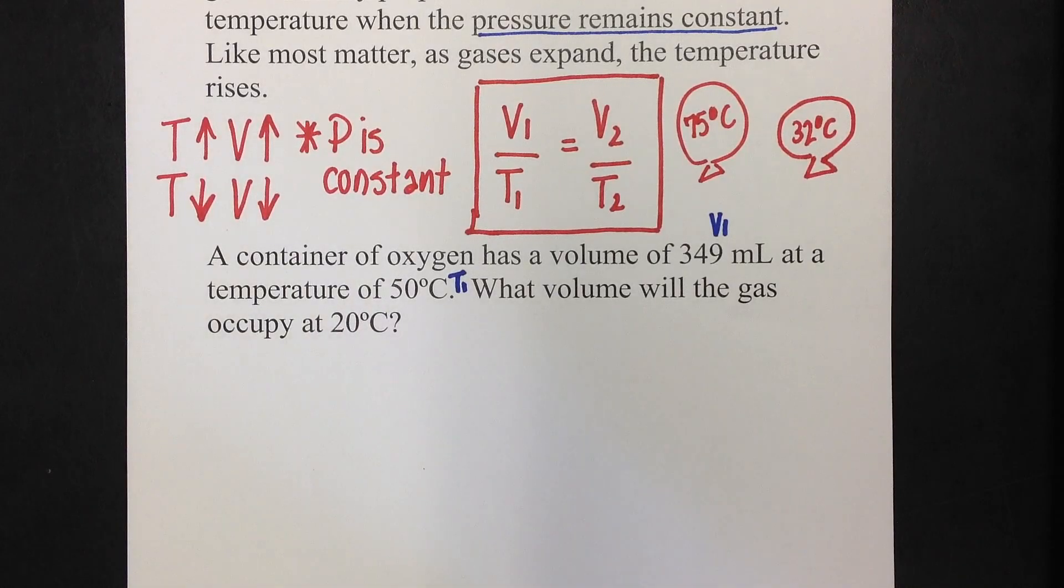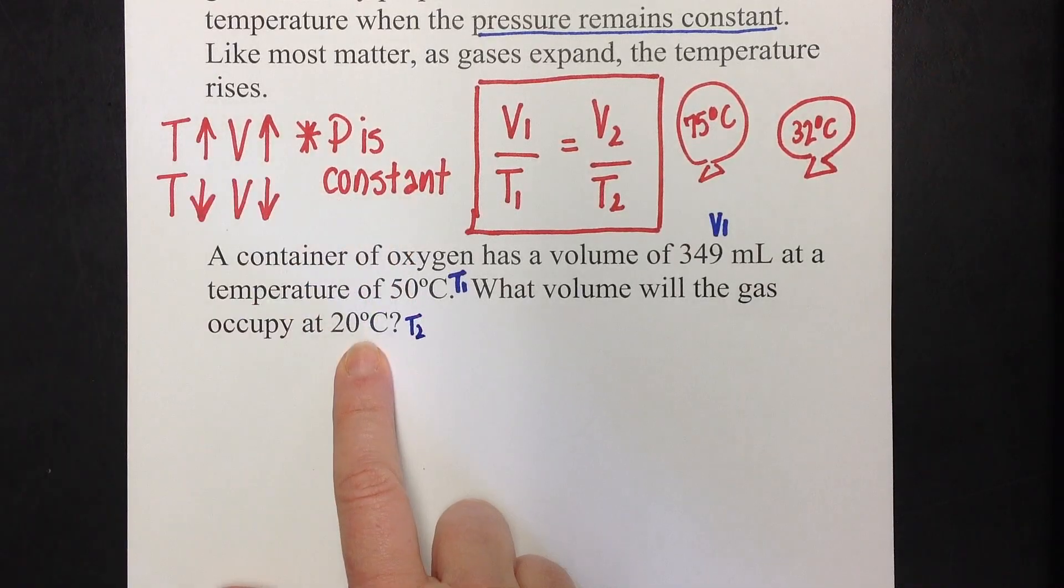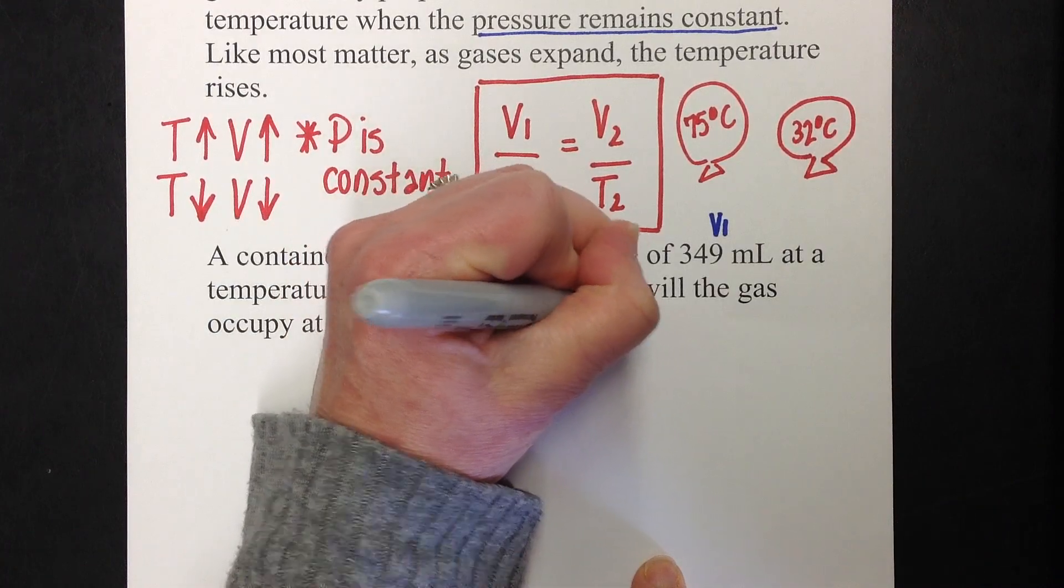What volume will the gas occupy at 20 degrees Celsius? That's the second temperature that they give me, also in Celsius, so I'm going to convert it to Kelvin. And they're asking what volume, so I am solving for volume 2.